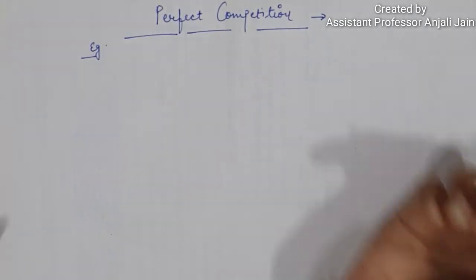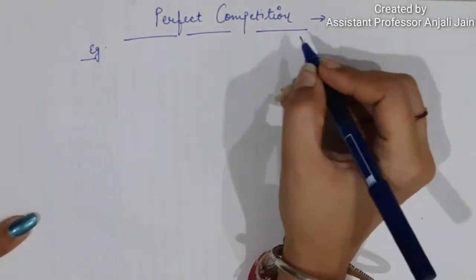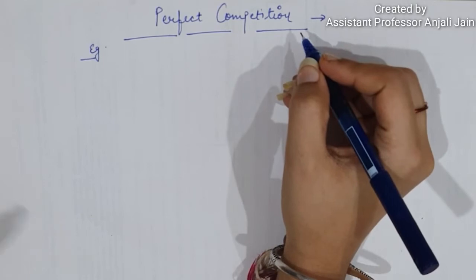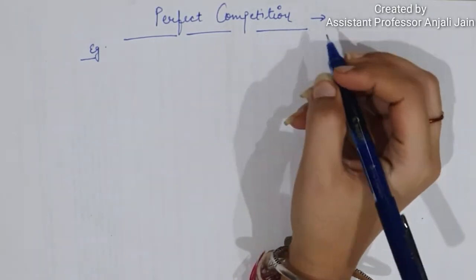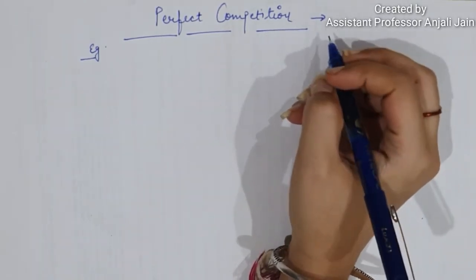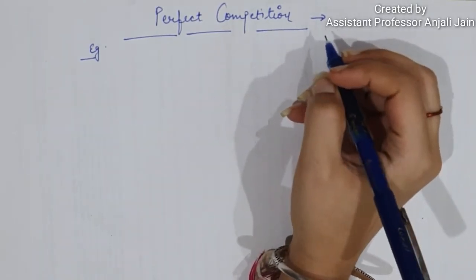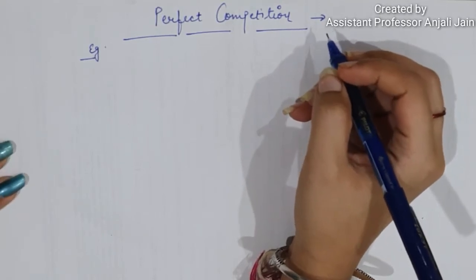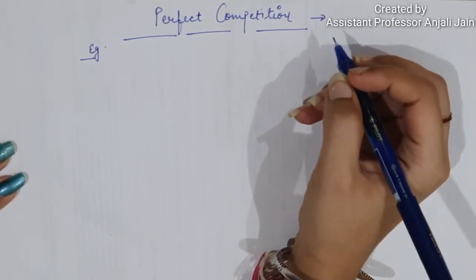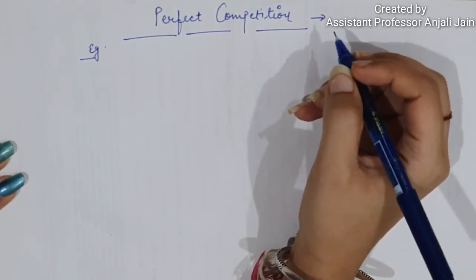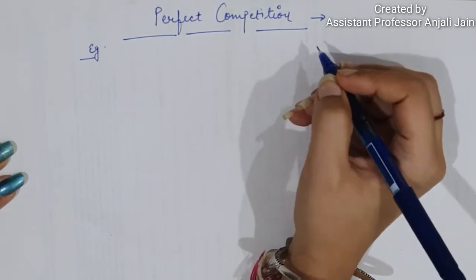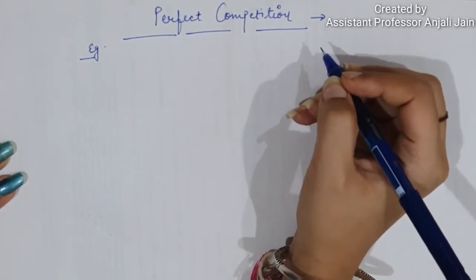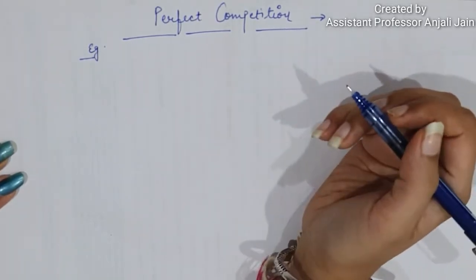Hello students, today's topic is perfect competition. Let's start. Perfect competition is a market structure where there are a large number of buyers and sellers dealing in a homogeneous product, and the price of such a product is determined by the market forces, that is, demand and supply.